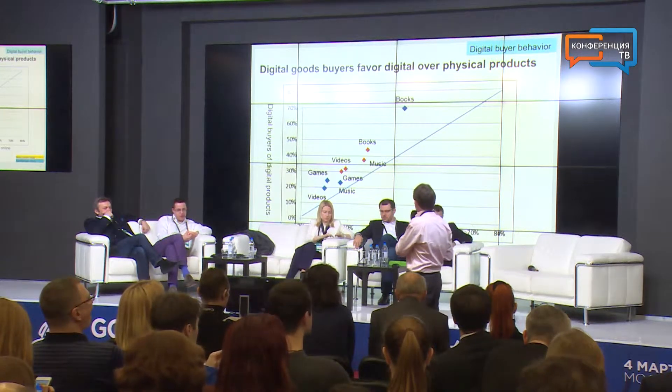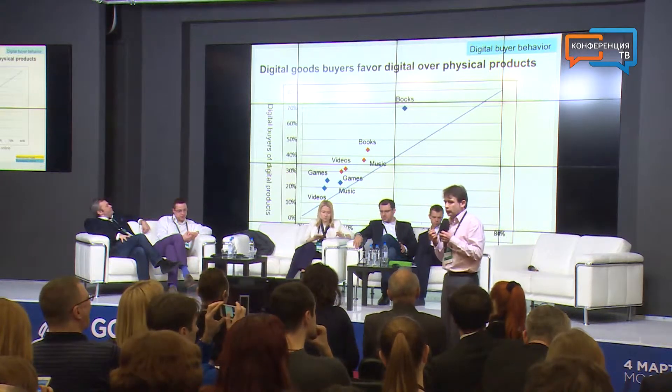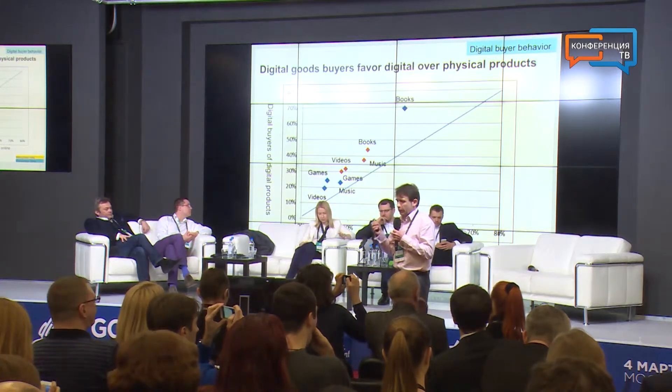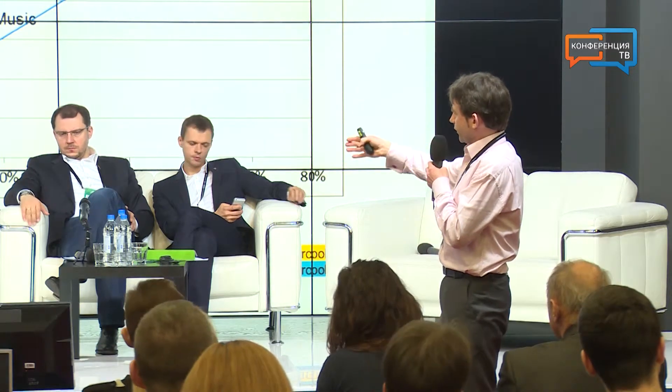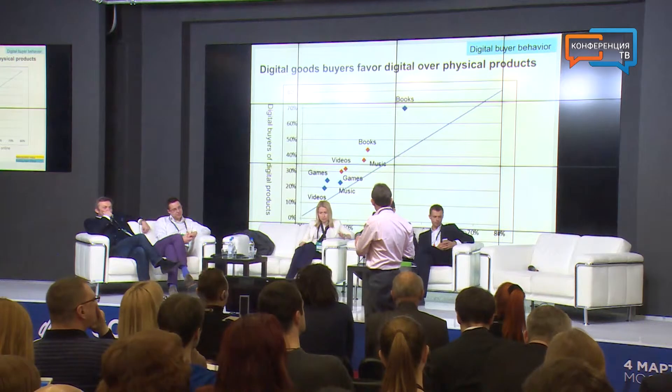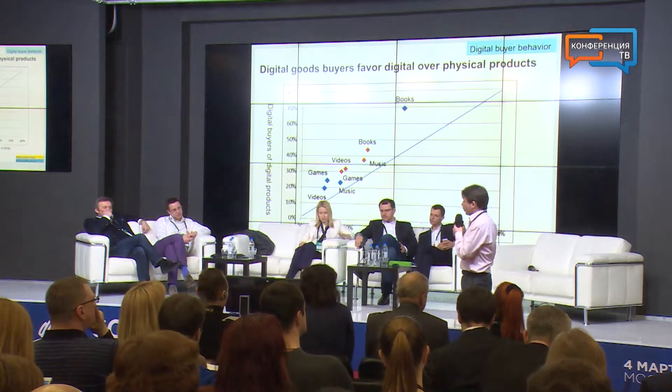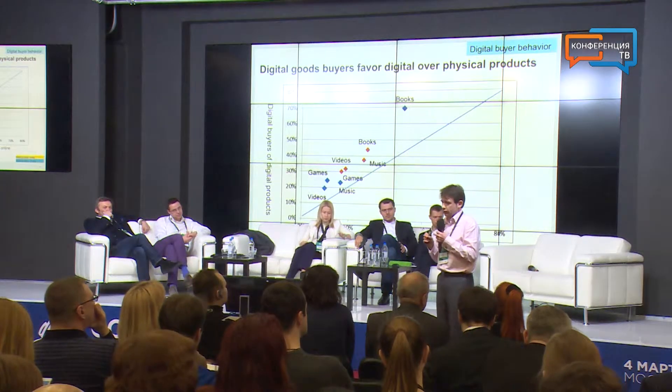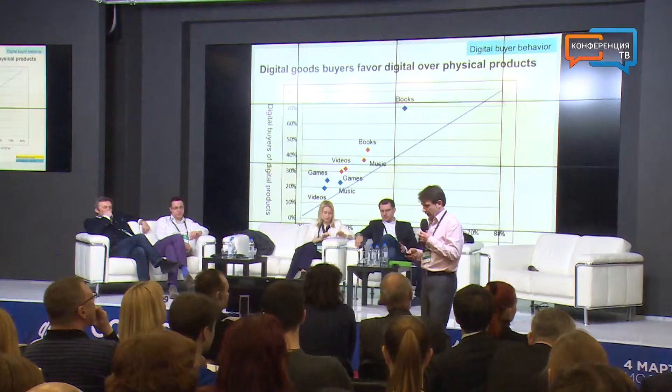A digital goods buyer will not buy uniquely digital goods — they will also buy physical goods. You need to understand the transition between going from purely physical to digital goods. Looking at data for metropolitan China and metropolitan India, digital goods buyers, once they've started down the digital route, tend to favor the digital goods route for buying music, video, etc. Once you've captured your audience, they tend to develop these behaviors over a longer time.